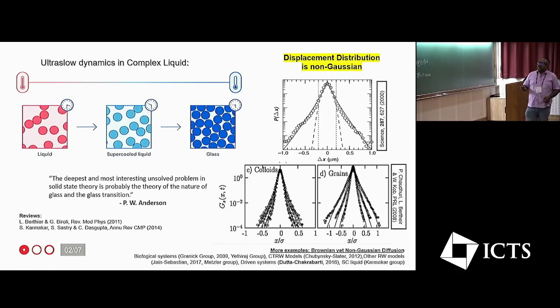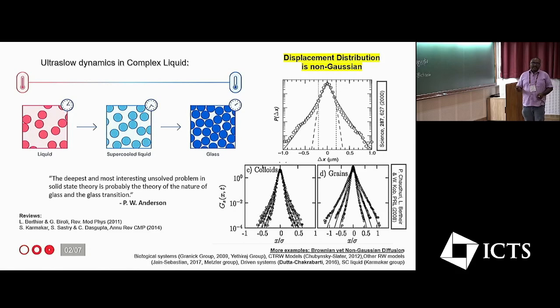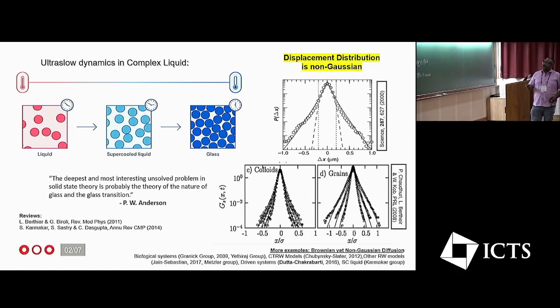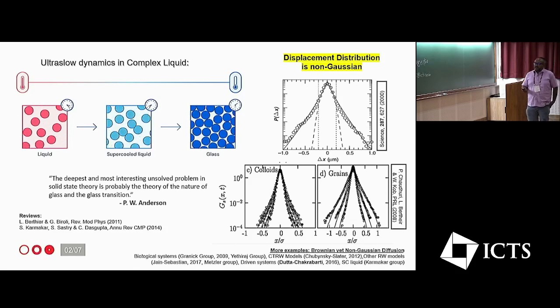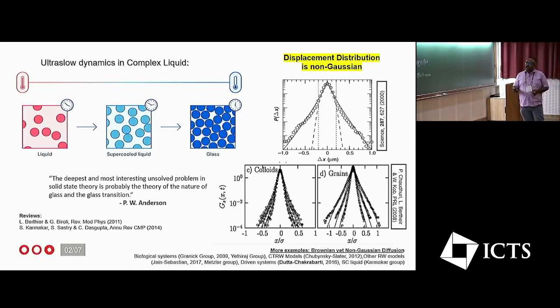In that case, the distributions are becoming non-Gaussian and that has been seen in many, many different kind of systems.